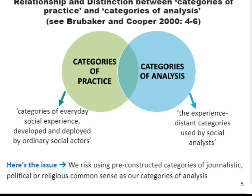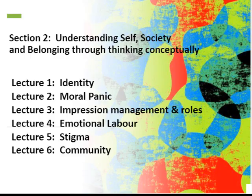To recap: categories of practice refer to the everyday language used by social actors and some social scientists to explain the social world. Categories of analysis refer to the analytical language used by social scientists to explore, explain and understand the social world, and there is heavy traffic between the two. Thinking of concepts as either a category of practice or a category of analysis helps us understand what the concept is helping us to analyze and how useful it is, while also helping us engage critically with it. In this section, we're going to be exploring the following concepts: identity, moral panic, impression management, roles, emotional labor, stigma and community. They're all used to describe the social world in particular ways, which helps us challenge what seems taken for granted and critically engage with how we understand that social world — all essential to understanding the relationship between self, society and belonging.